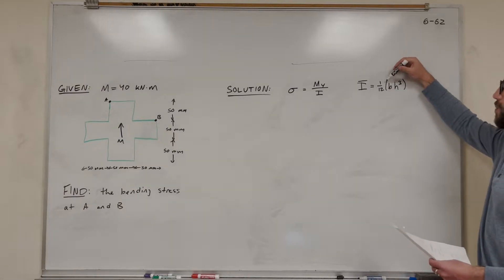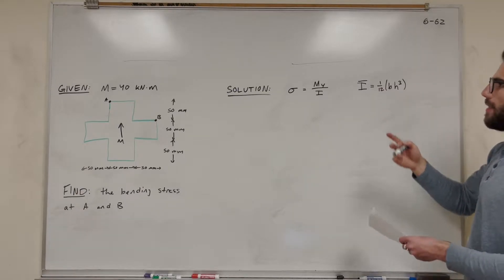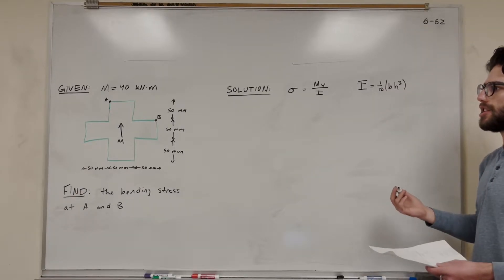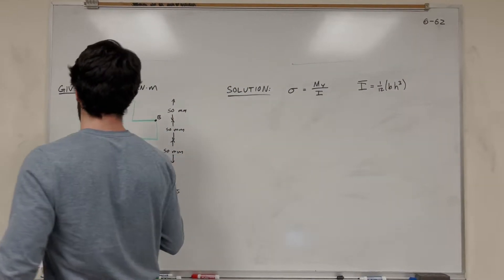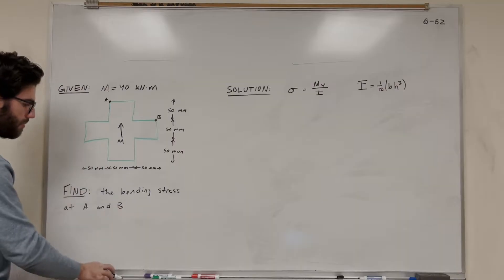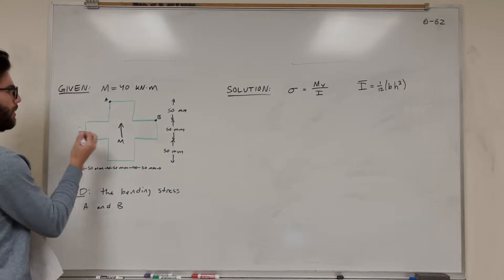And so the equation for that is one-half base height to the third. The reason we can use this, and we don't have to use the whole extended thing for the inertia, is because we can pick our centroid. So that we don't have to have anything that's off the centroid.